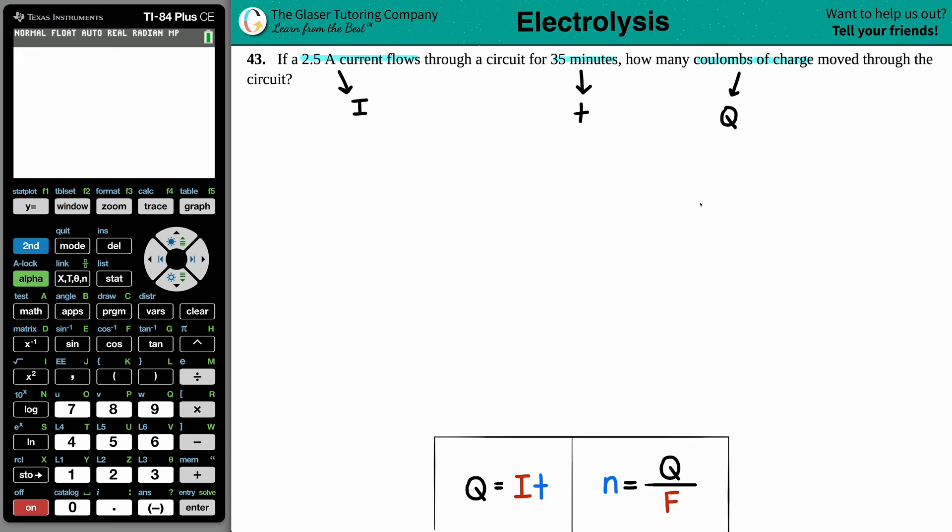So this one is just a straightforward formula. Going down to our formulas for electrolysis, q equals i times t. So I'll use this equation first. I'm trying to solve for q. I have an i value of 2.5 amps, and I have a time value of 35 minutes.